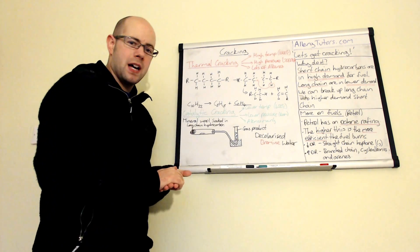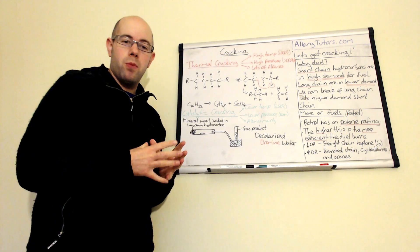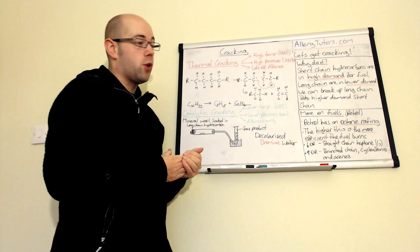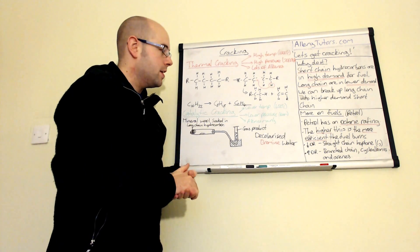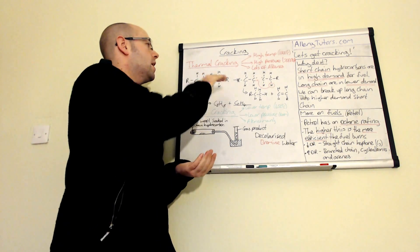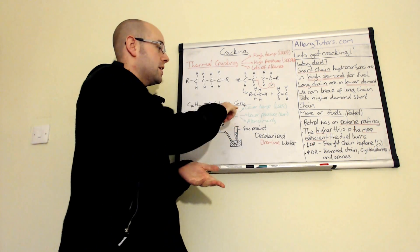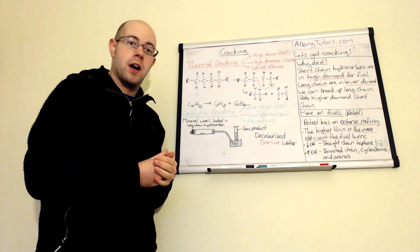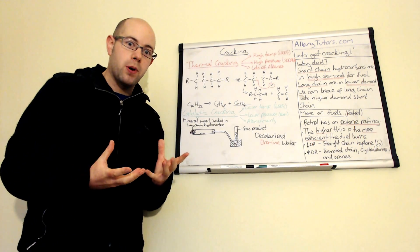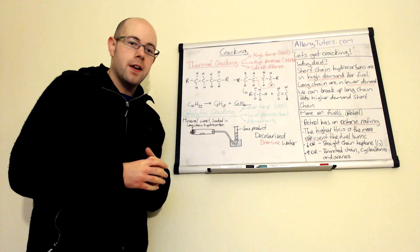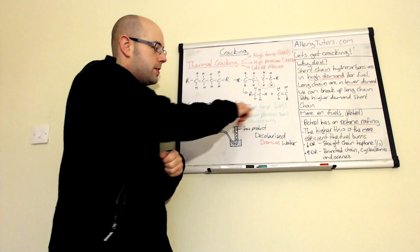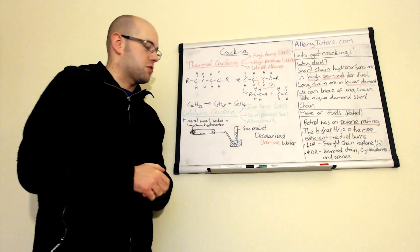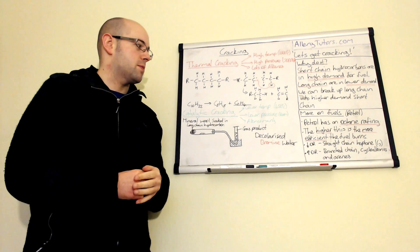To make fuels we have to use a different form of cracking called catalytic cracking. Catalytic cracking has advantages over thermal cracking. One advantage is lower temperature. Lower temperature means you're not burning as much fuel, so it's better for the environment and cheaper. It also uses lower pressure, just above room pressure, so that's ideal. You mainly form alkanes from catalytic cracking.